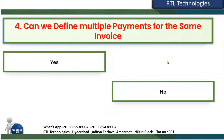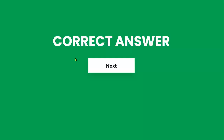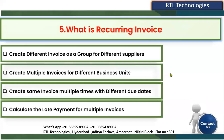The fourth question is: can we define multiple payments for the same invoice? For example, if we raise one invoice in Account Payables for one thousand dollars, can we pay the supplier in two installments — first installment of seven hundred dollars and second installment of three hundred dollars? Yes, we can make the payment in multiple installments.